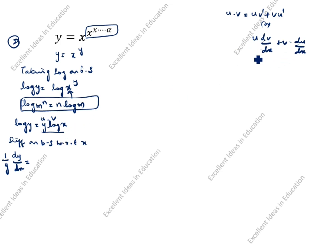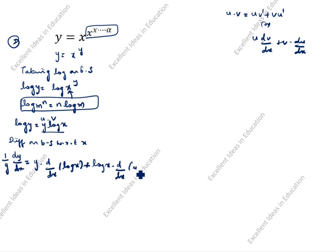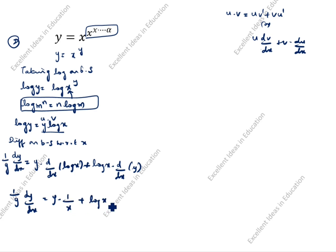Applying the product rule where u = y and v = log x: (1/y)·dy/dx = y·(differentiation of log x, which is 1/x) + log x·dy/dx.